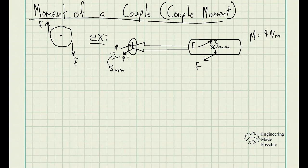They're equal and opposite, which basically is causing this screw to turn, to rotate. And the distance between these two forces P here is 5 millimeters.